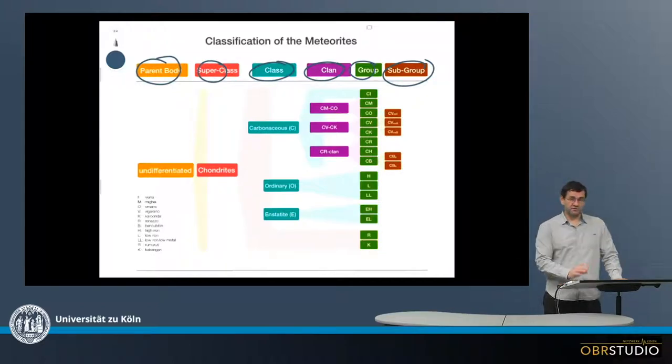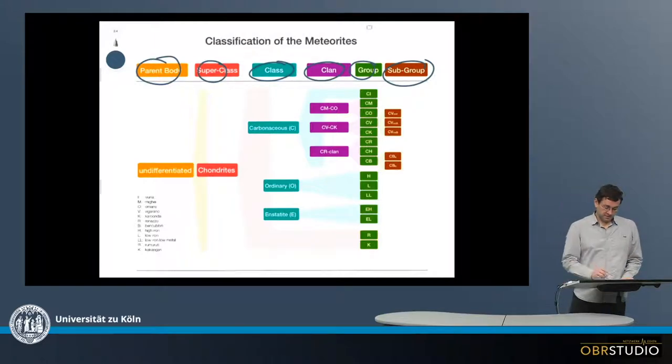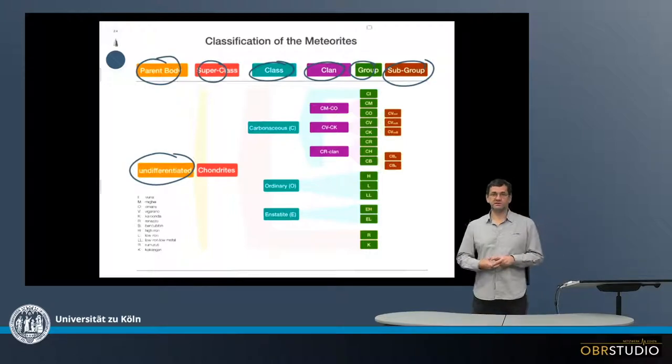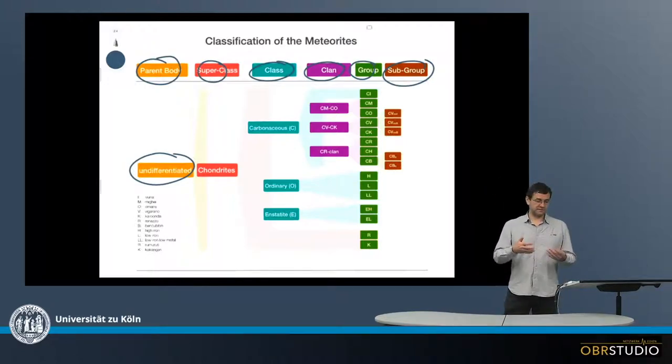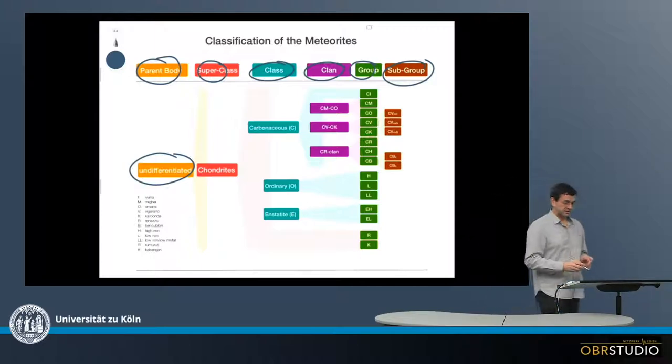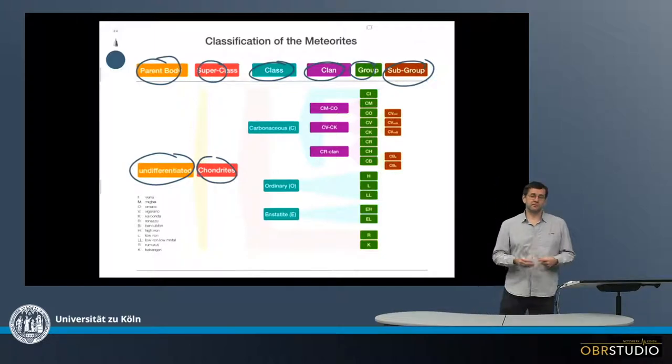I'll go through these starting with the parent body. There are three different types of parent bodies. First are the undifferentiated parent bodies. These objects, these meteorites, these asteroids, contain components as they were formed most likely in the solar system, or in the case of presolar grains, even before then. When we look at these kind of primitive chondrites and study their components, we study the protoplanetary disk and the processes within this disk.